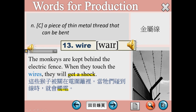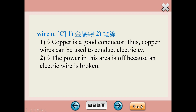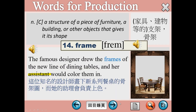Wire是金屬線或者是電線。The monkeys are kept behind the electric fence. When they touch the wires, they will get a shock. 照片裡面你看到這些電圍籬，英文叫electric fence，when they touch the wires，they will get a shock，get a shock是觸電。